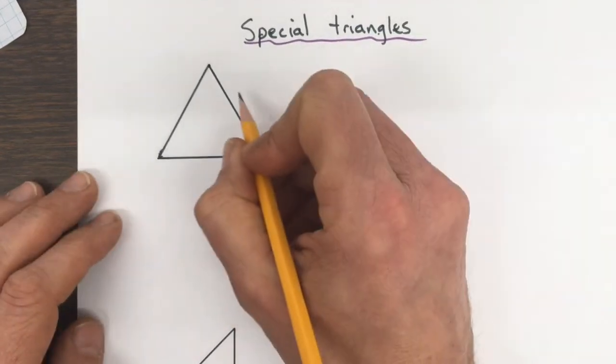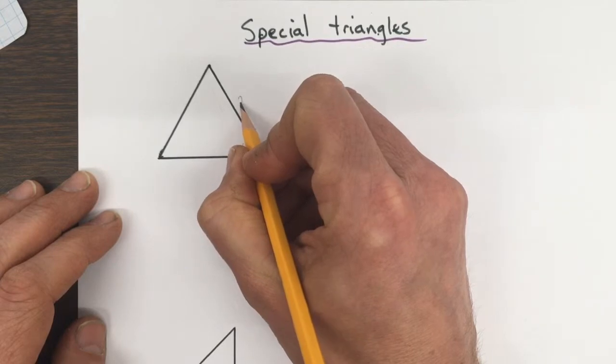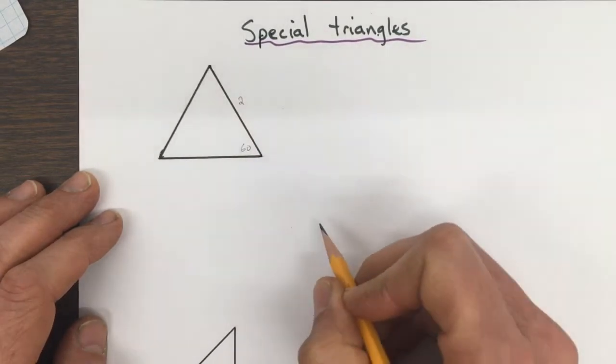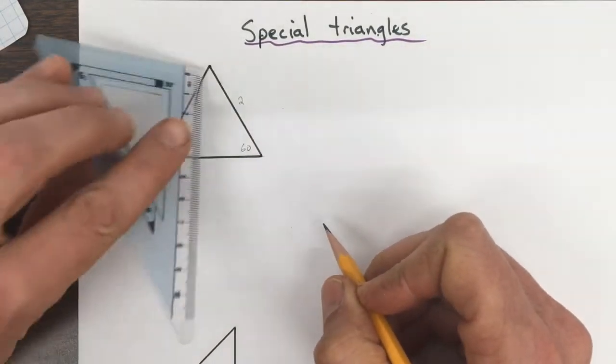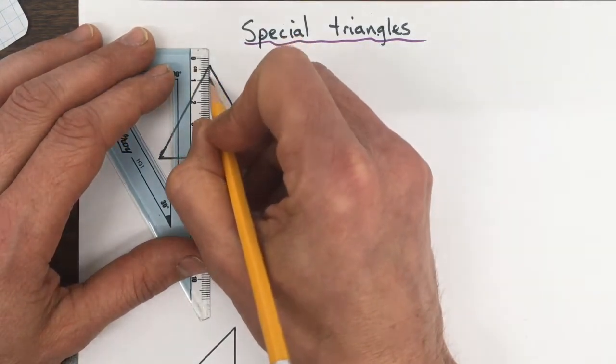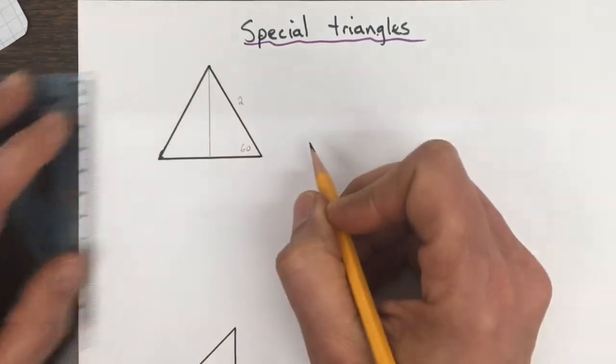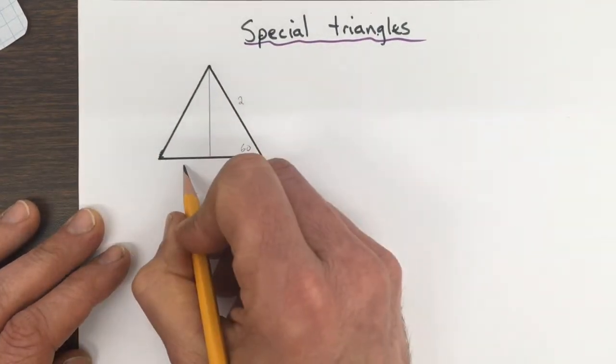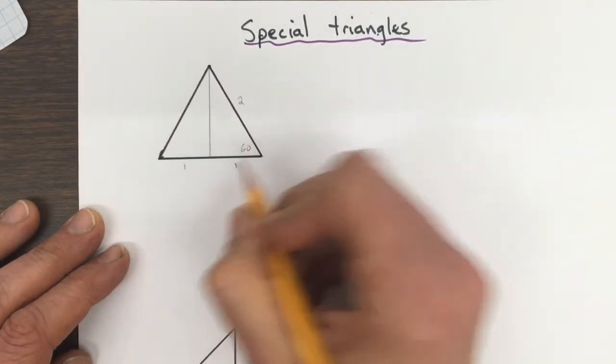What you can do with this one, if we make the side two units long and then we cut it in half, that makes the base one unit and one unit.